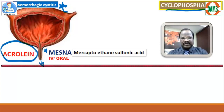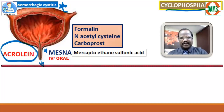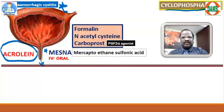Mesna controls hemorrhagic cystitis, but mesna alone is not sufficient. To have better efficacy, mesna is combined with formalin, N-acetylcysteine, or carboprost. Carboprost is a prostaglandin PGF2-alpha agonist. N-acetylcysteine is a mucolytic agent also useful for paracetamol poisoning. Mesna is the specific antidote for cyclophosphamide, combined with carboprost or N-acetylcysteine for better efficacy in controlling hematuria.